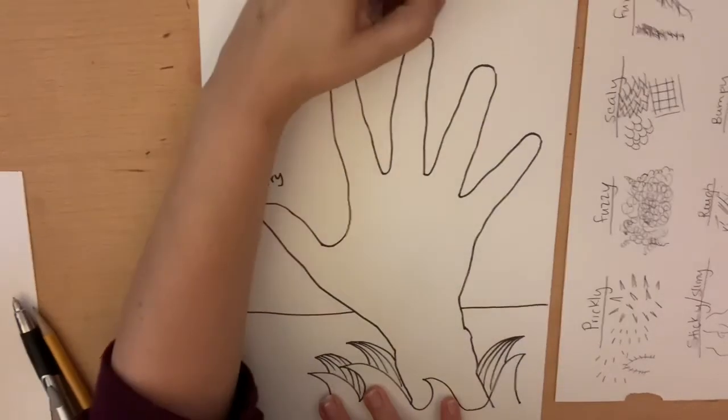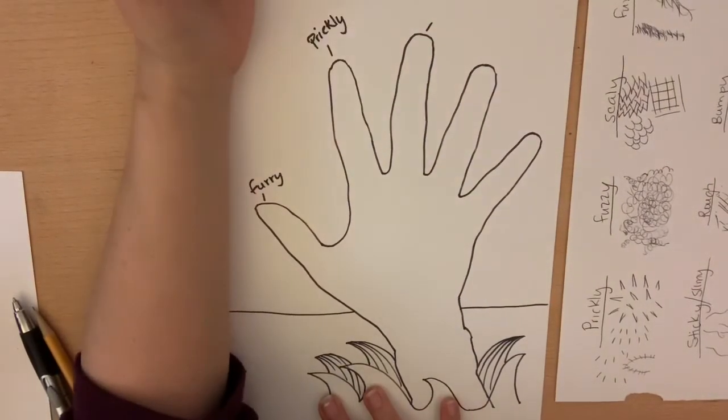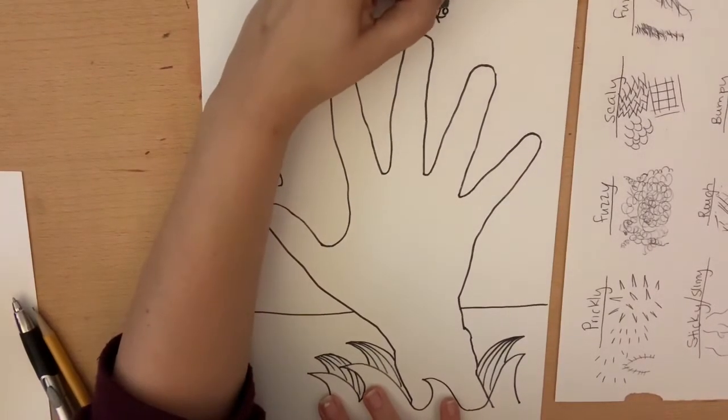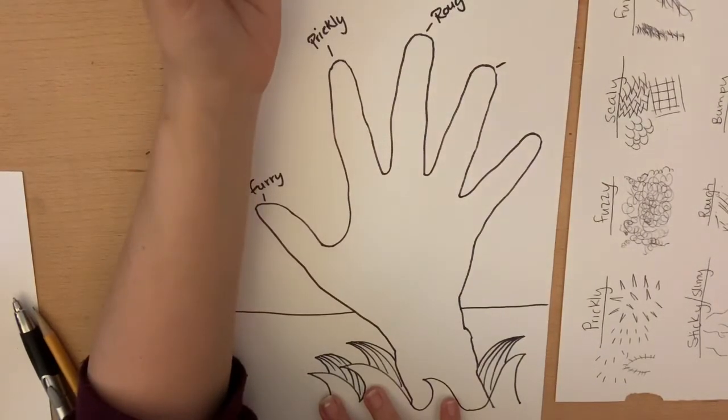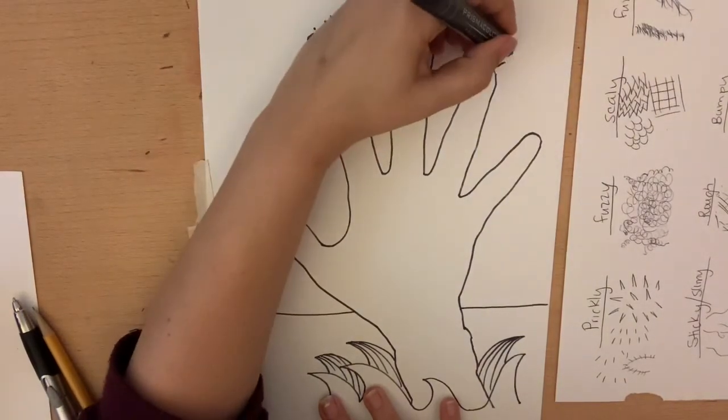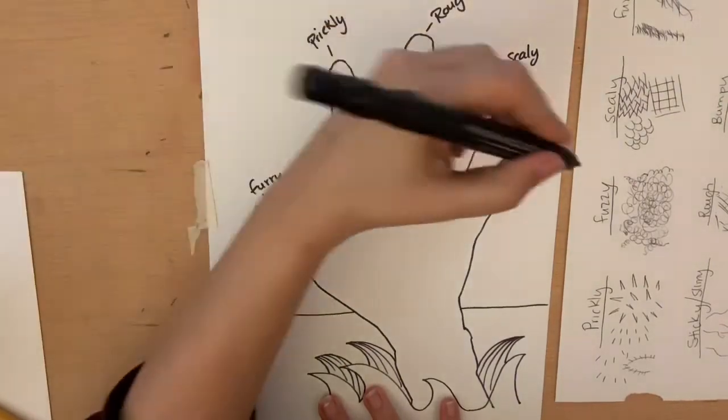I'm going to pick... I already have furry. I'm going to pick rough like a rock. I'm going to pick scaly. And fuzzy.